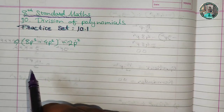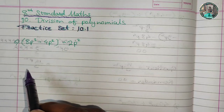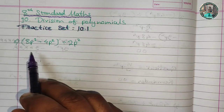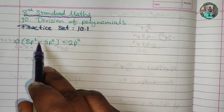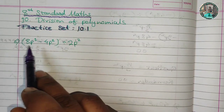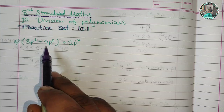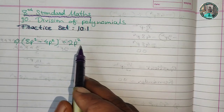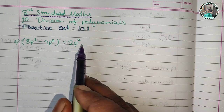In this video, we will solve all the remaining problems. Now, what is question 6? 8p cubed minus 4p squared, divide by 2p squared. We can solve it.